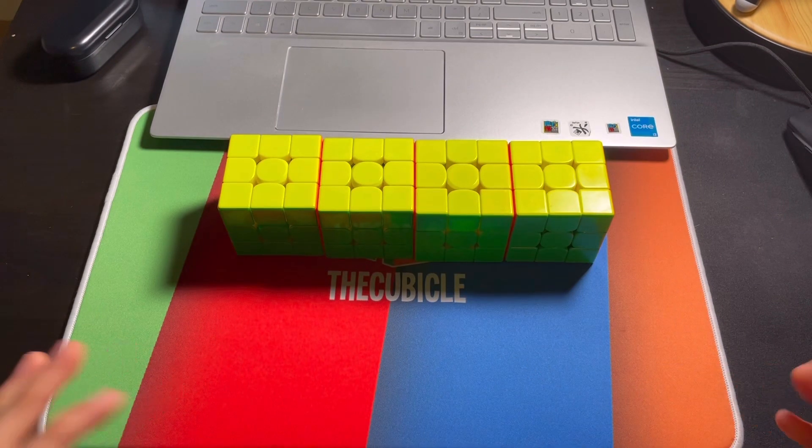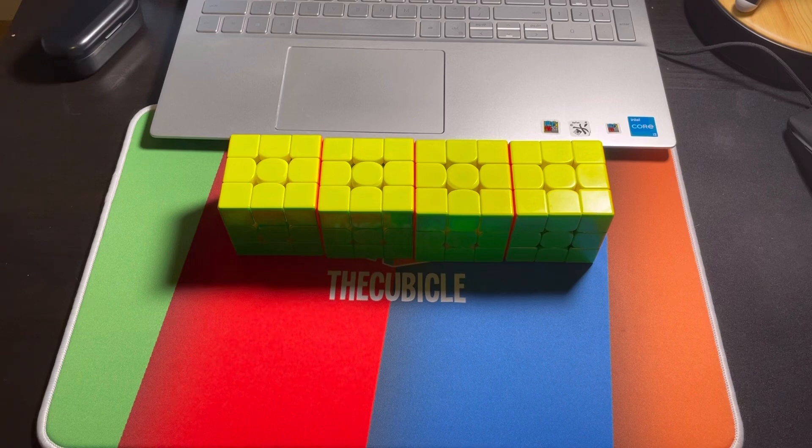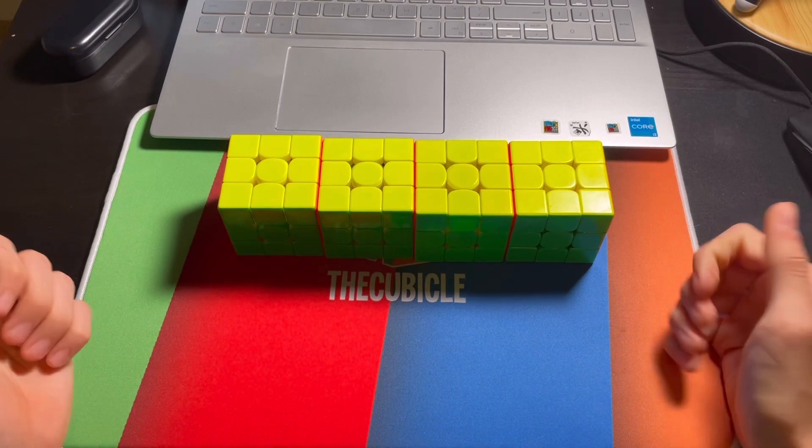So yeah, those are the easiest ZBLLs I know, and you can start implementing these yourselves pretty much today. I'll leave all the algorithms in the description, including the sune and E-perm algorithms. Hope this was helpful, hope you enjoyed.